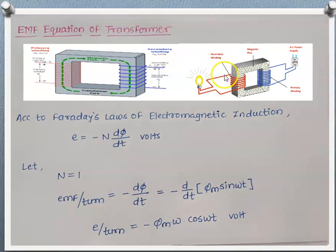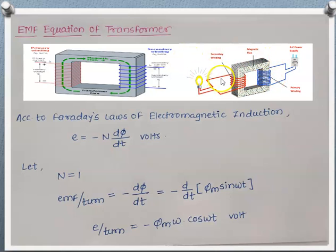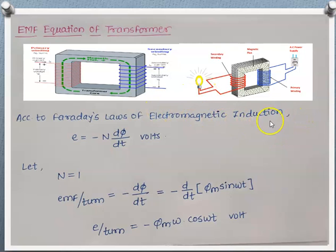The load here is a bulb, so the bulb will glow as EMF is induced in the secondary winding and the path is closed, allowing current to flow. This is the working principle of the transformer. Now, how much EMF gets induced in the secondary winding and also in the primary winding — we are going to derive that according to Faraday's law of electromagnetic induction.